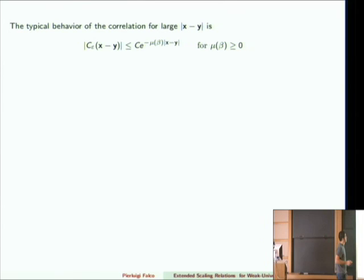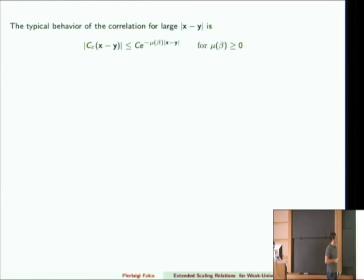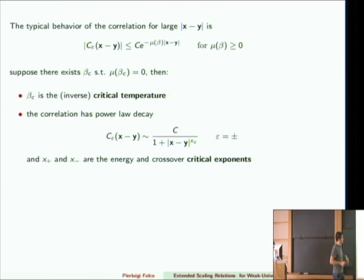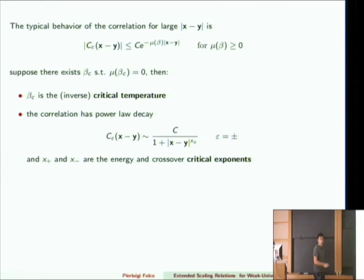What is the typical behavior of a correlation for |x − y| large? For most values of beta (the inverse temperature), the correlations decay exponentially with a coefficient mu that is non-negative. But sometimes mu is zero for a certain value of beta — this special value is called the critical beta. When you are at critical beta, rather than exponential decay you get power-law decay with a certain exponent.